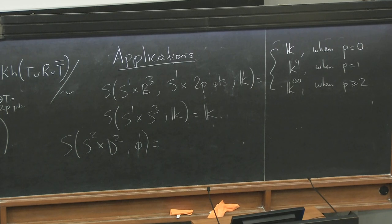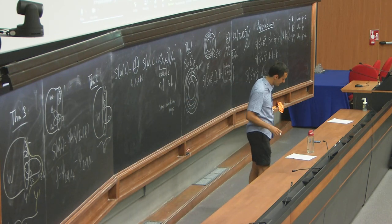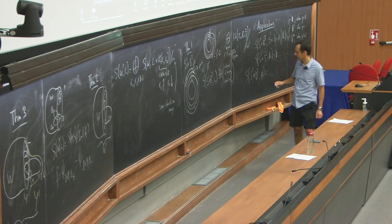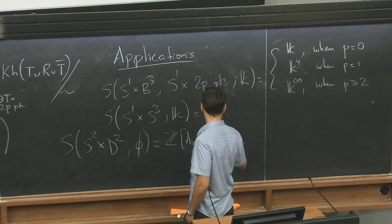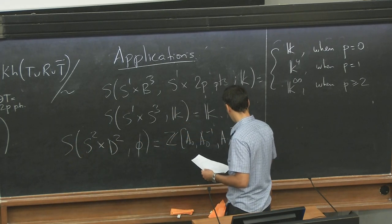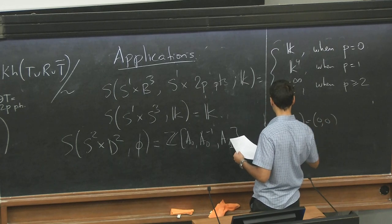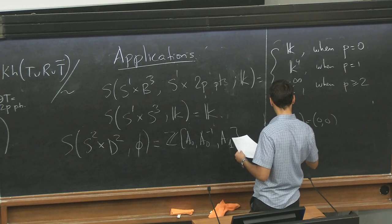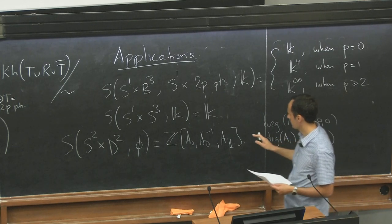This corresponds to attaching a two-handle. So now as an application of theorem two, let's just attach a zero-framed two-handle along the unknot. Then I can understand the cables of the unknot, the zero-framed cables of the unknot. That's no problem. And I can compute this. And I get something. I get some polynomial ring in A0 and A0 inverse. And A1, several i. Sorry, just one i. A1. I don't know. Degree of A0 is zero zero. And degree of A1 is zero minus two.